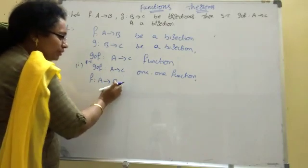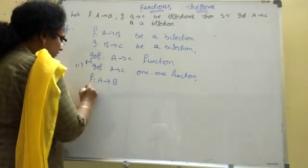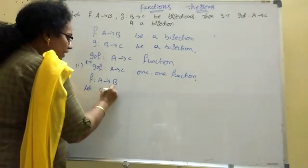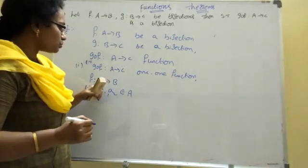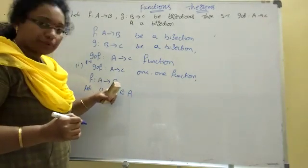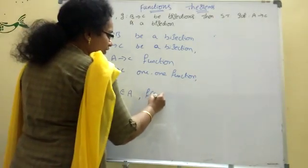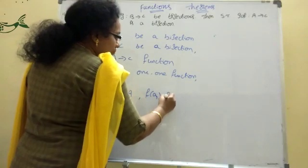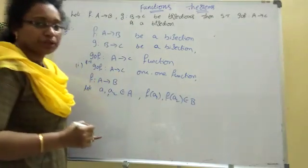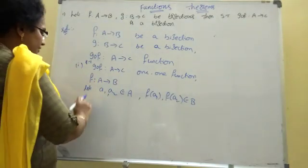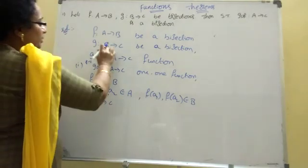G circle F from A tends to C is a function. First, F from A tends to B. F of A tends to B. Let A1, A2 belong to A — two elements. The image of capital B: that is F of A1 and F of A2 belonging to B.